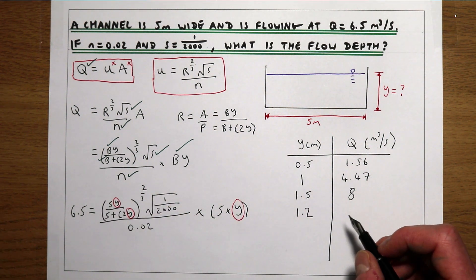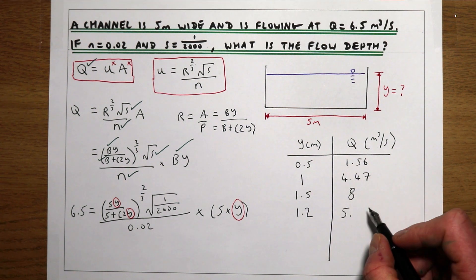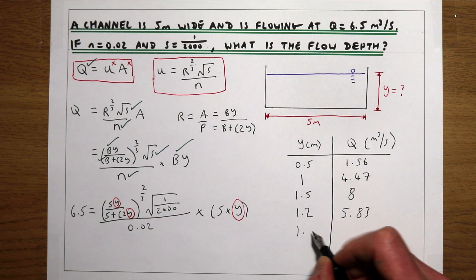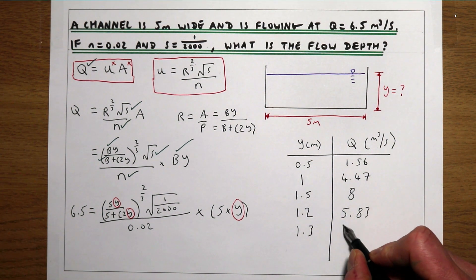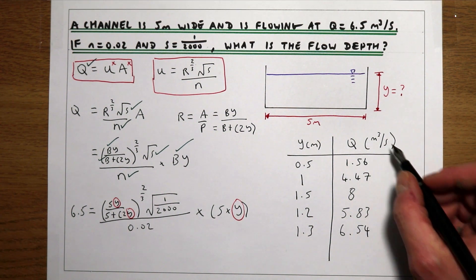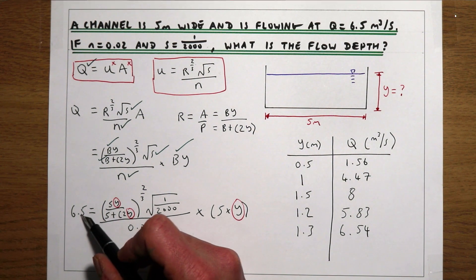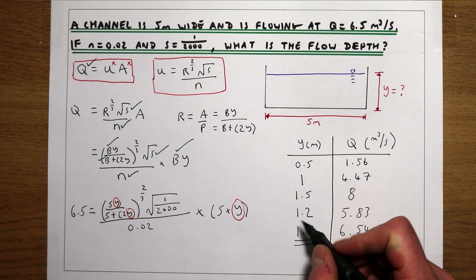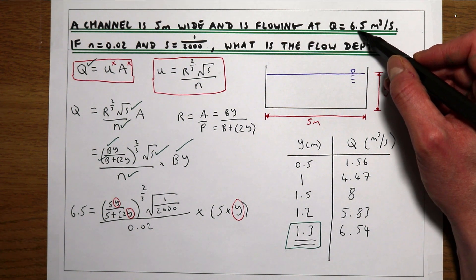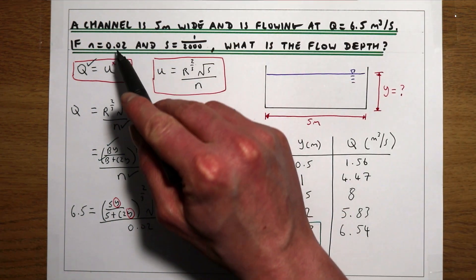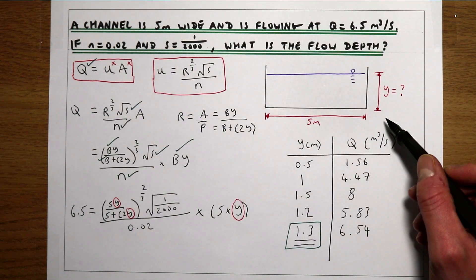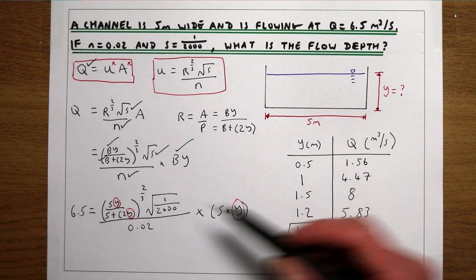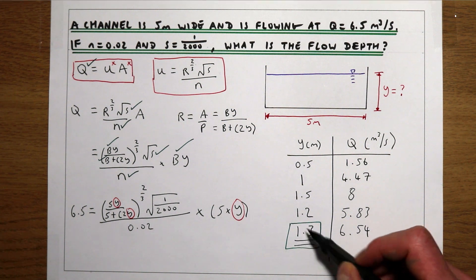Trying Y = 1.2 metres gives a discharge of 5.83 m³/s, which is slightly smaller than needed. Entering Y = 1.3 metres gives a flow of 6.54 m³/s, which is close enough to our desired flow of 6.5 m³/s. So the flow depth in this question is 1.3 metres. With a flow of 6.5 m³/s, Manning's n = 0.02, slope = 1 in 2000, and width = 5 metres, the process of trial and error using Manning's equation and the continuity equation gives us a flow depth of 1.3 metres.